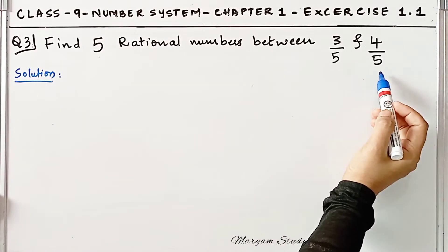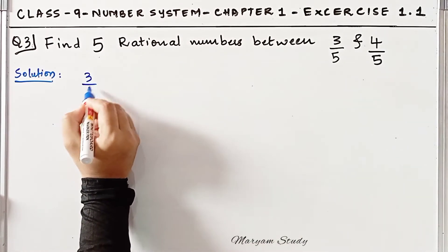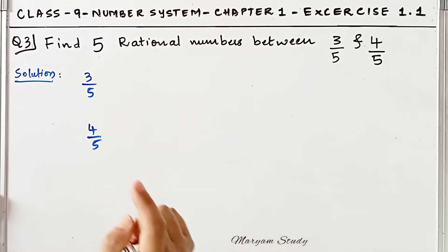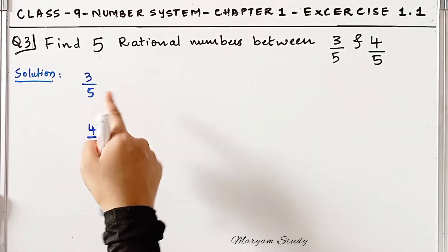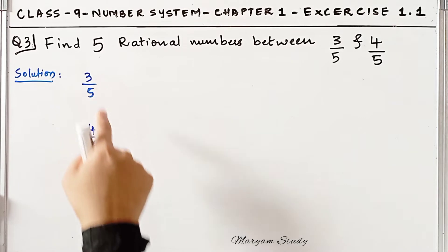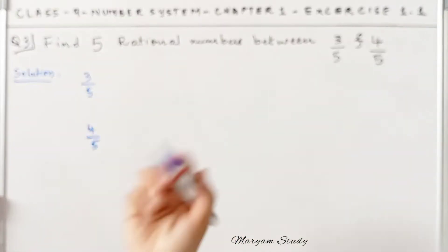These are already given in rational form, so we will use them: 3/5 and 4/5. In the last problem, we were given only whole numbers, 3 and 4, so we first converted them to rational numbers. Here they're already in rational form, so we will proceed.